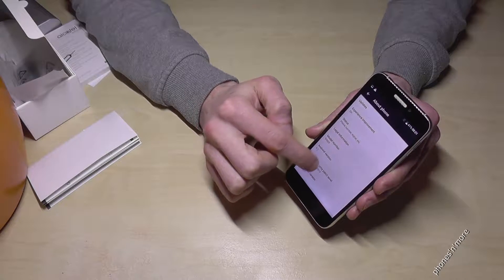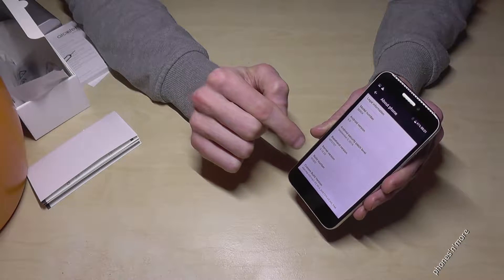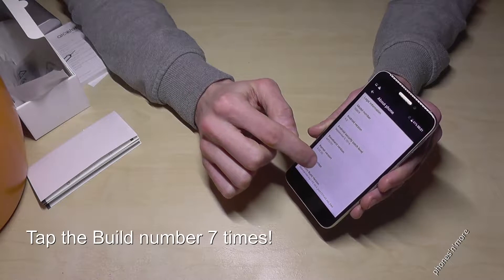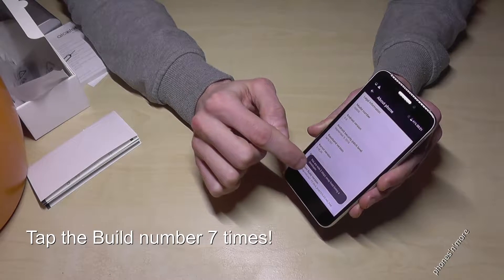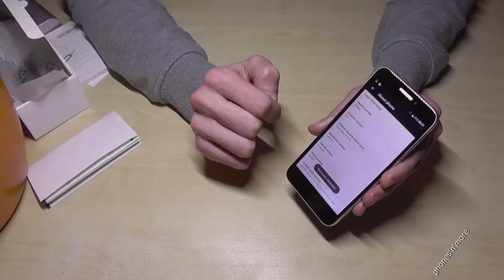Then we need the build number, also below, this one. We have to tap that build number seven times. There comes a countdown and now we are a developer.